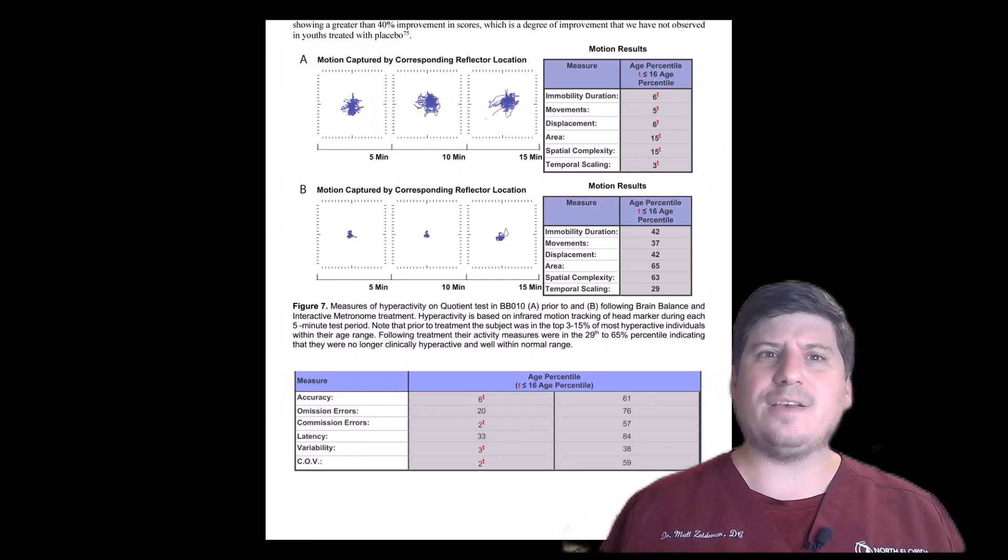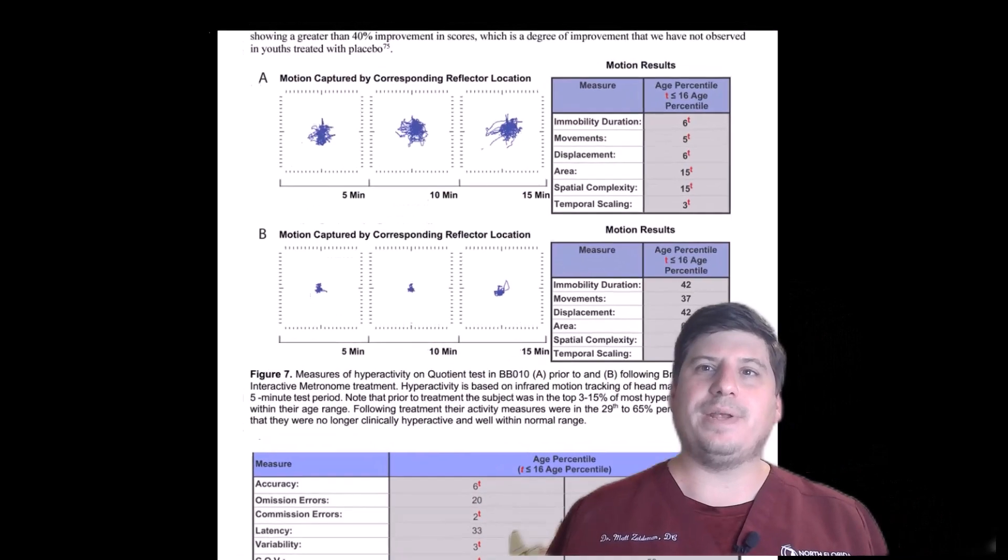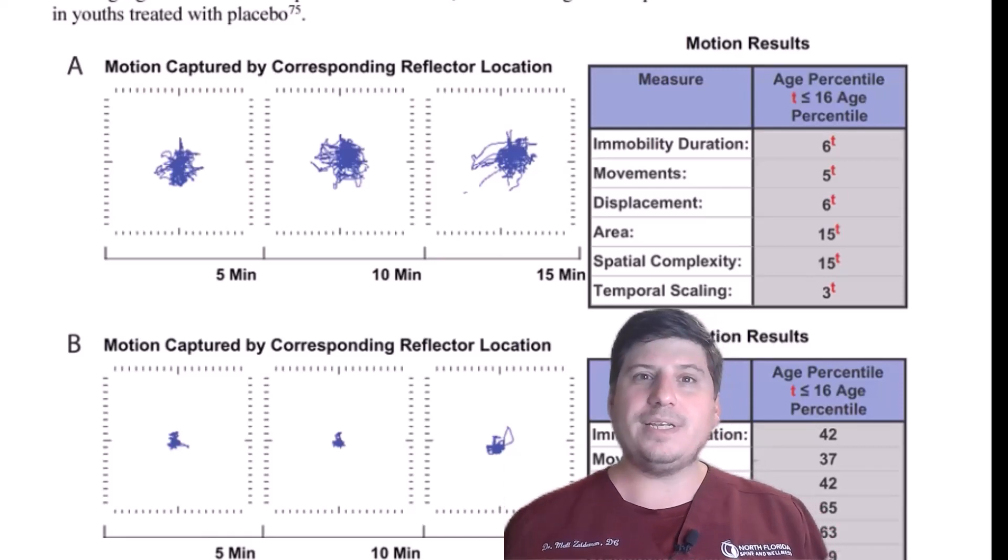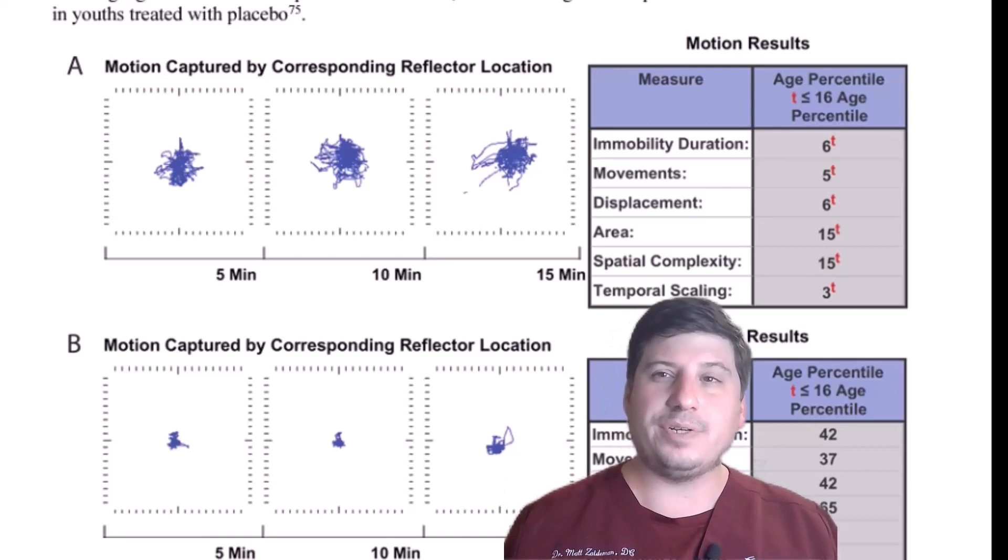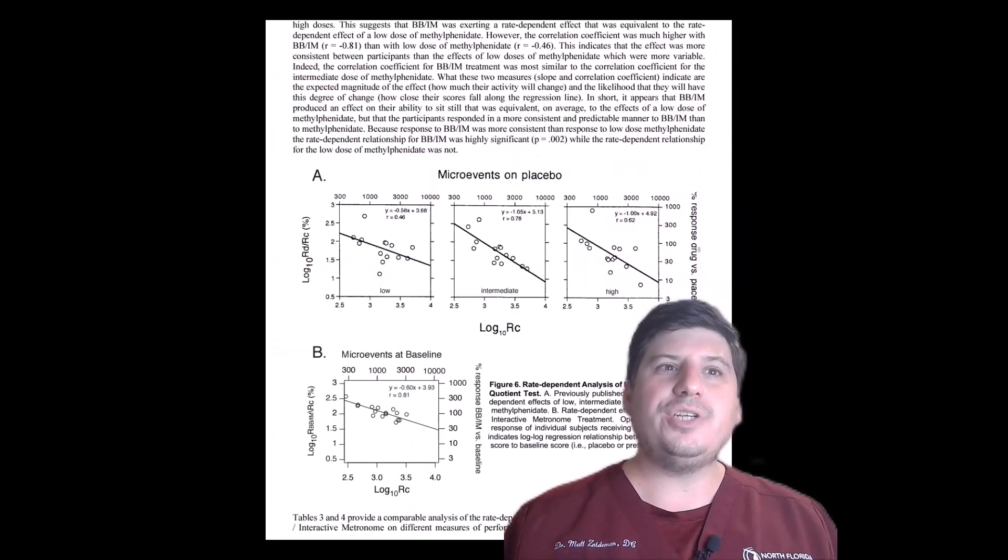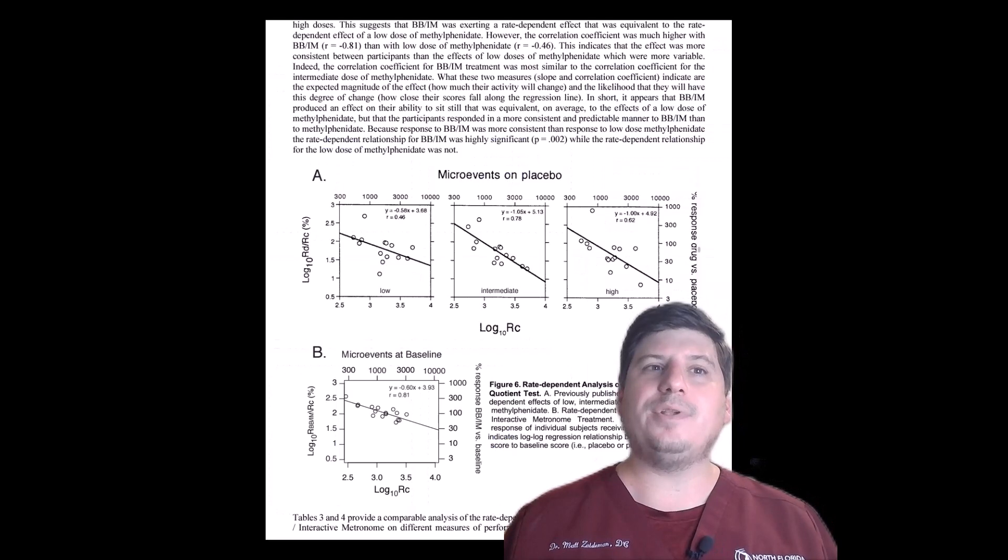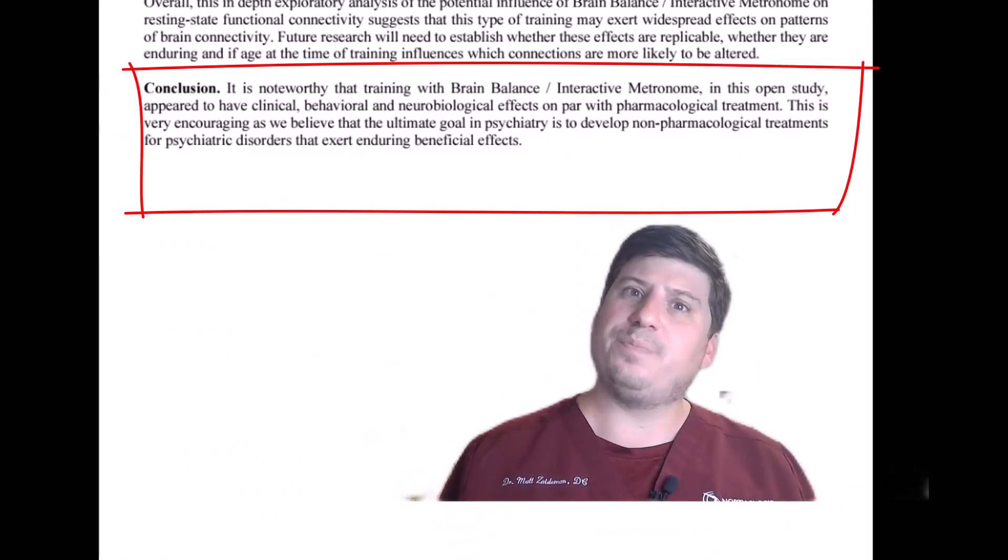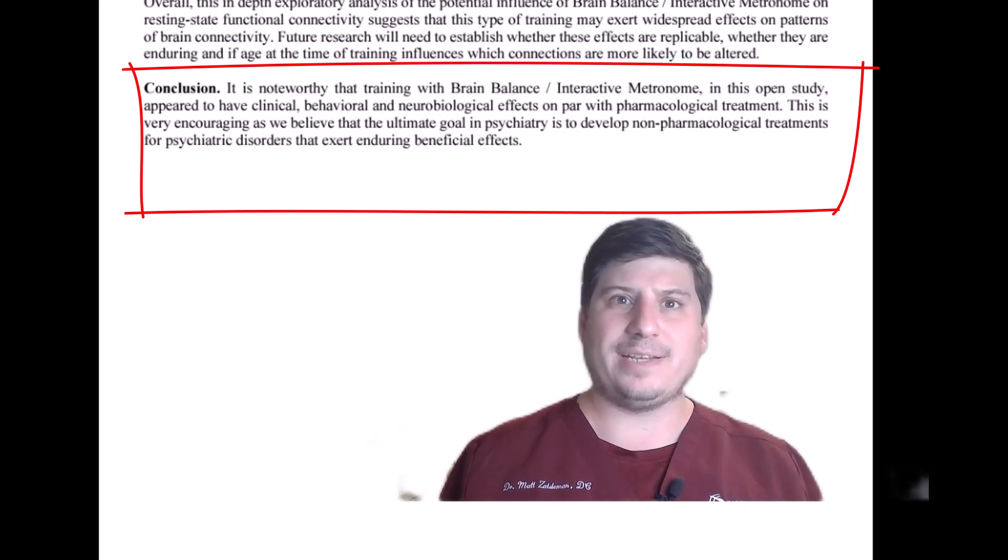When looking at the quotient testing, post-treatment we saw a big reduction in objective measurement of hyperactivity. What you're seeing here are infrared light that measures head movement and the test subjects went from the 3 to 15th percentile to the 29th to 65th percentile. Overall this showed that Melillo method had a similar impact as intermediate dose of stimulant medication, which by the way doesn't always seem to show improvement in hyperactivity, shows improvement with attention oftentimes but not with hyperactivity.